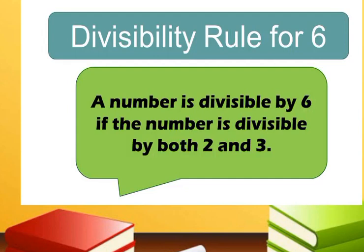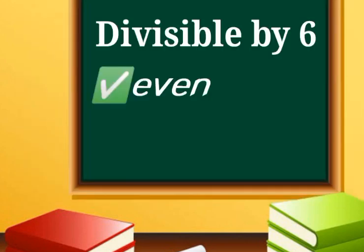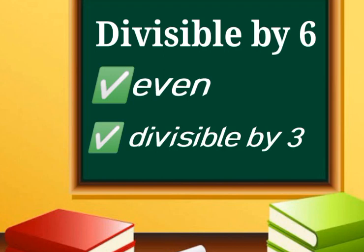Now let's have the divisibility rule for 6. A number is divisible by 6 if the number is divisible by both 2 and 3. Remember, a number is divisible by 2 if it is an even number, and a number is divisible by 3 if the sum of its digits is divisible by 3. A number will only be divisible by 6 if it meets two conditions: first, it should be an even number, and second, the number must be divisible by 3.